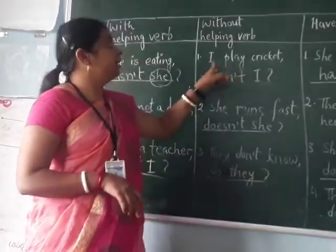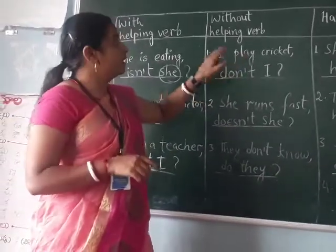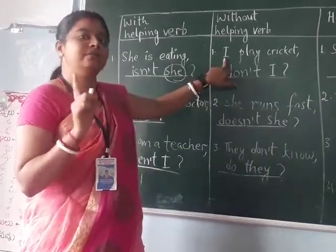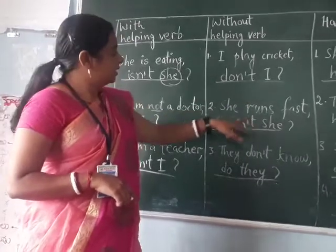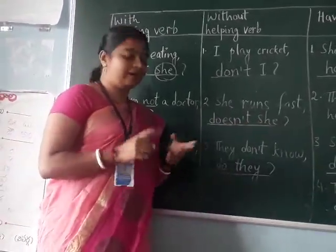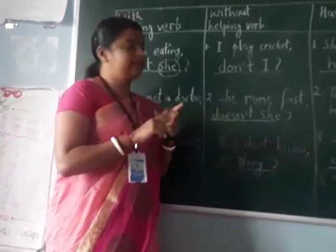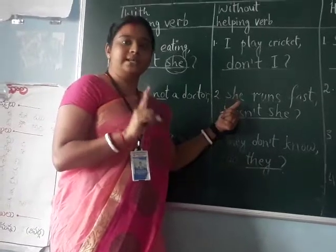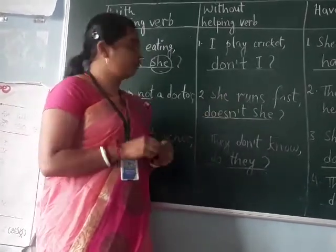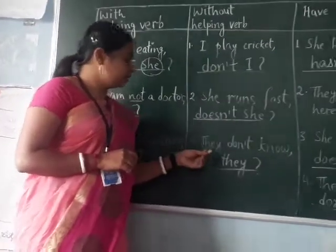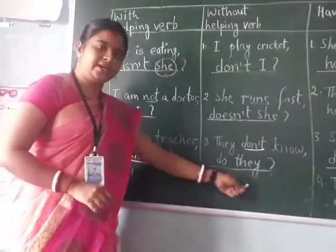Did is used for the past tense. If it were past tense, we would use did. But 'I play cricket' is in present tense, so we will use do or does. Now coming to the pronoun — it is 'I.' With 'I' we don't use does, we use do. So the question is positive, question tag will be negative: 'don't I.' Next question: 'she runs fast.' There is no helping verb, present tense, and with 'she' we always use does — so the answer will be 'doesn't she?' Third one: 'they don't know' — 'don't' is a negative word, so answer will be positive: 'do they?'